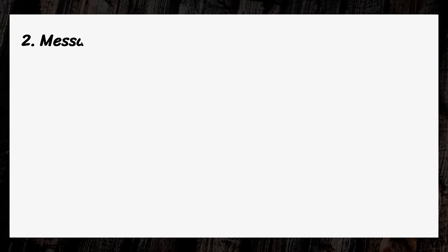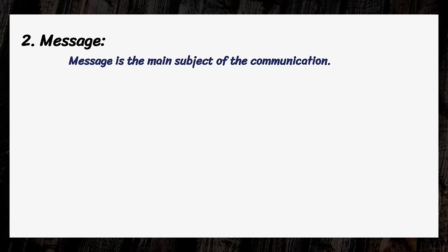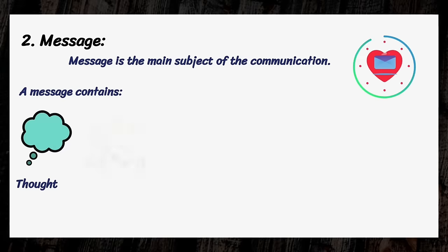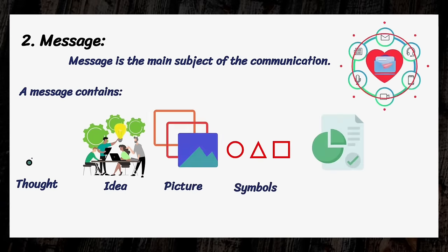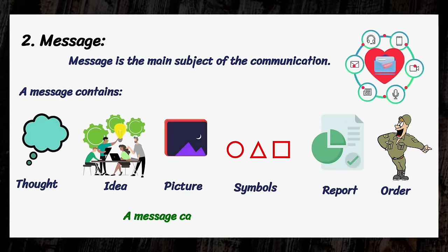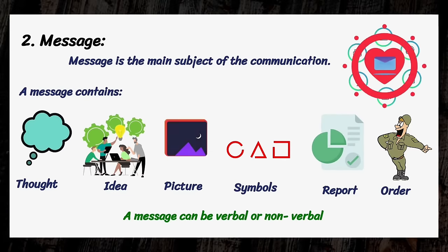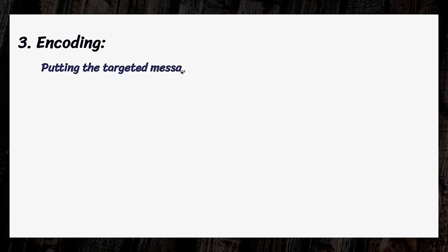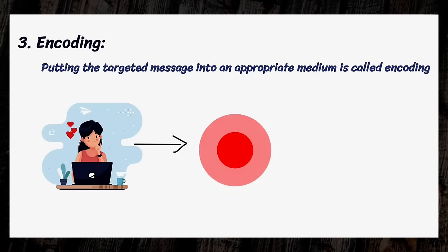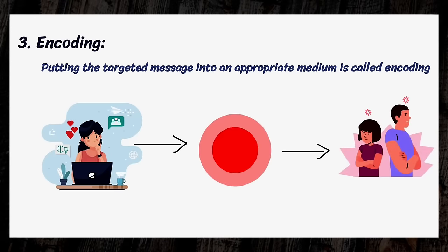The message is the main subject of communication. It is also called the heart of communication. A message contains a thought, idea, picture, symbol, report, or order, as well as gestures and postures. A message can be verbal or non-verbal. Encoding means putting the targeted message into an appropriate medium. Encoding is very important because a wrong or inappropriate encoding may change the true intent of the communication.